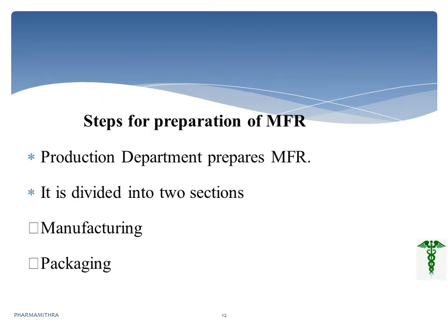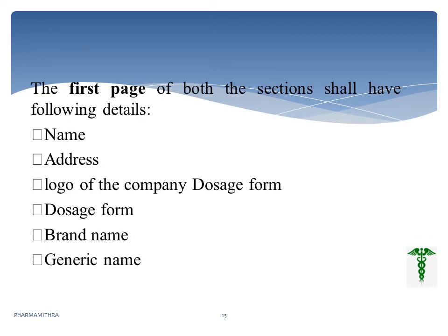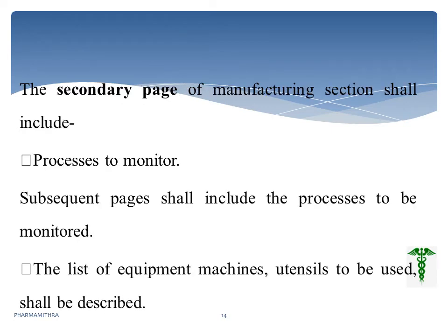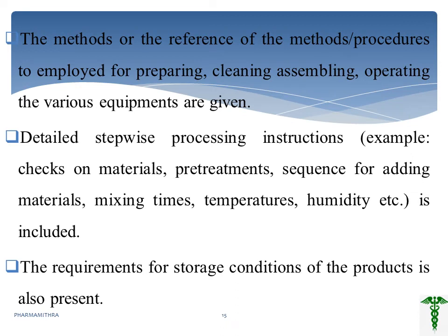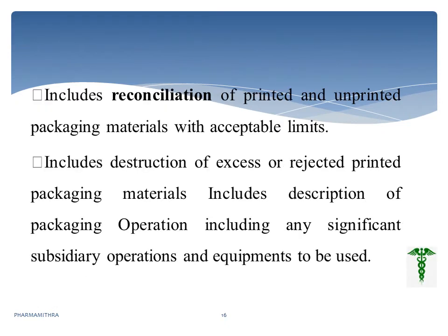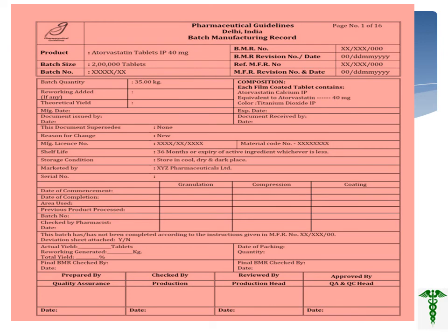The MFR is divided into two sections: the manufacturing section and the packaging section. The first page of both sections should contain at least the name, address, and logo of the company, dosage form, brand name, and product code as initial details. The secondary page should describe the process, equipment used, and stepwise method instructions including material checks, sequence, temperature, and humidity. It also includes reconciliation of printed packaging material, including any excess or rejected printed material.